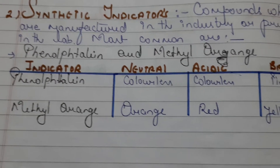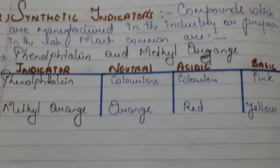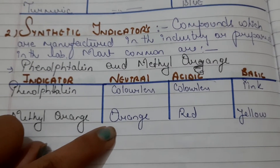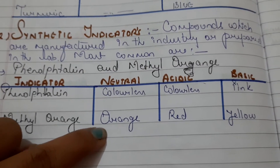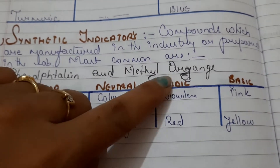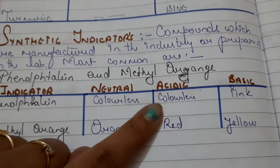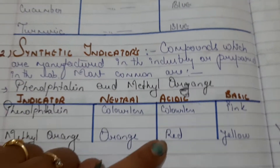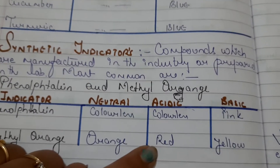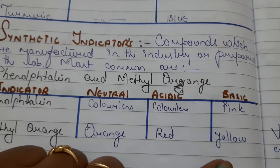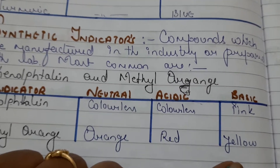Methyl orange remains orange in neutral solution. In acidic medium it turns red, and in basic medium it turns yellow.